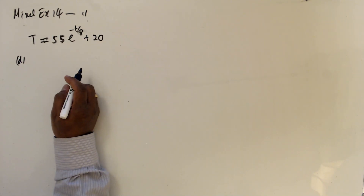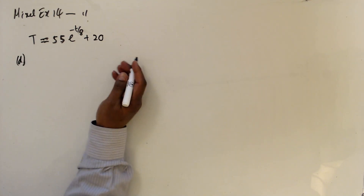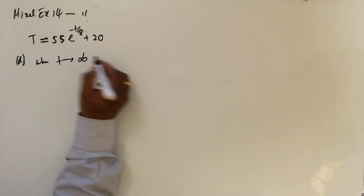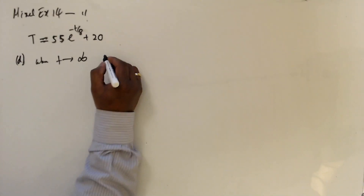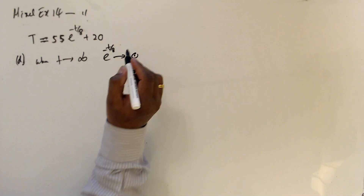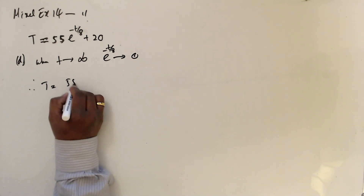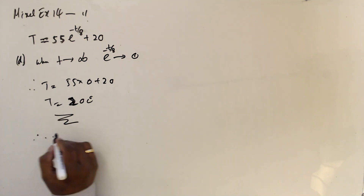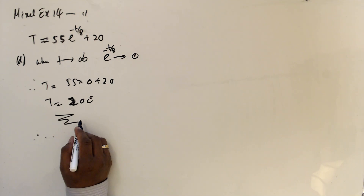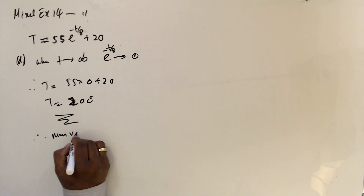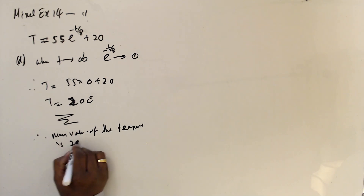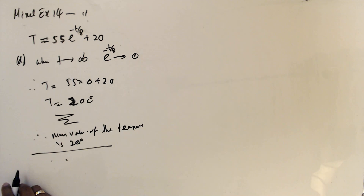Part D: by sketching the graph or otherwise, explain why the temperature will never reach a certain low value. As T goes to positive infinity, the term e to the power of minus t over 8 goes to 0. Hence T equals 55 times 0 plus 20, giving T equals 20. So the minimum value of temperature is 20 — this may be the room temperature in a tropical country.